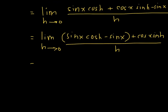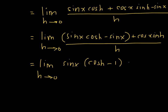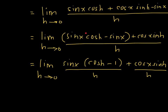This leads us to f prime of x equal to the limit as h approaches zero of sine of x times cosine of h minus one, plus cosine of x times sine of h. I'd like to write each of these terms over h, since it is all of this in the numerator divided by h — these are two fractions with the same denominator, so this is allowed.